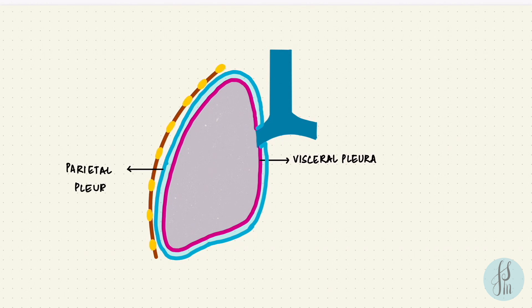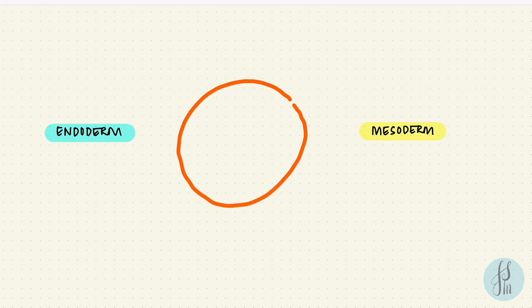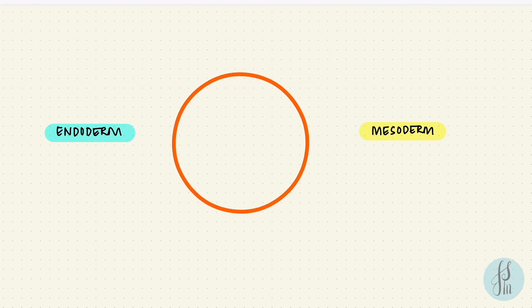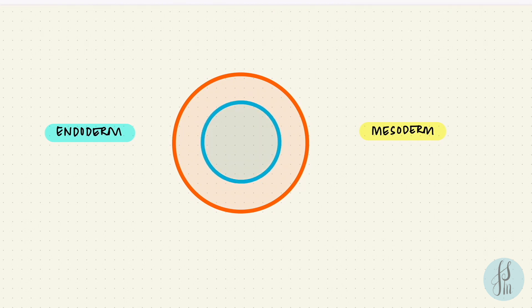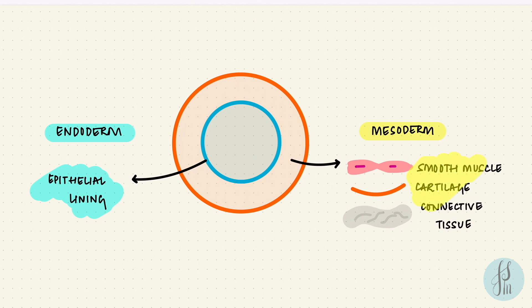The pleura is mesodermal in origin. Remember the three germ layers: the ectoderm, the mesoderm, and the endoderm. The airways have different structures in their walls depending on the level. Overall, there can be an epithelial lining, smooth muscle, cartilage, and connective tissue. The epithelial lining is from the endoderm, while all the other components are from the mesoderm. Those are the embryological derivatives.